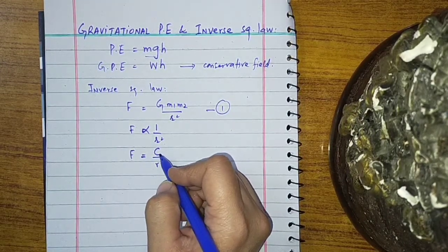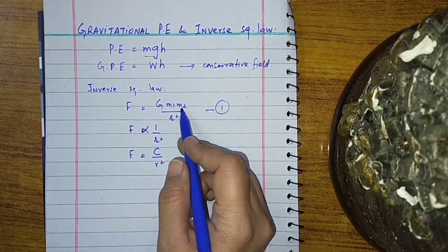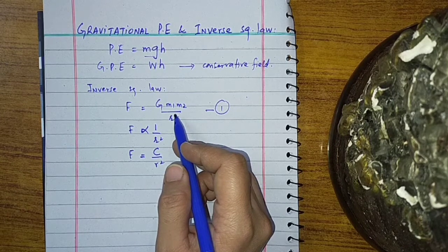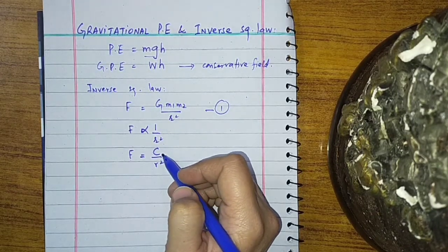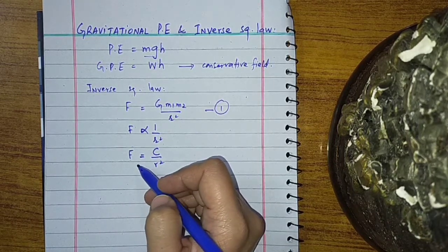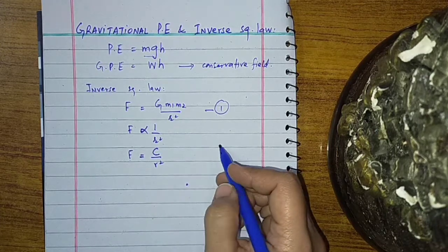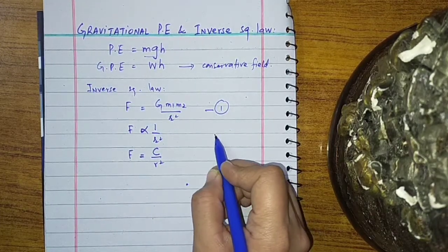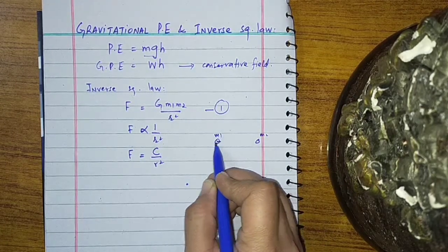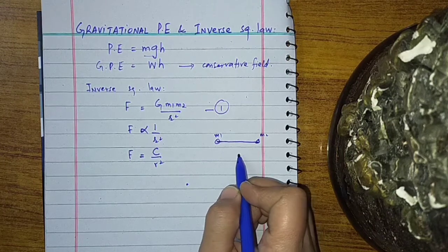If we compare, we see that C is placed in place of G M1 M2, so C is also known as the constant of proportionality. This force is known as the central force, and it is directed along the line joining the two particles M1 and M2.